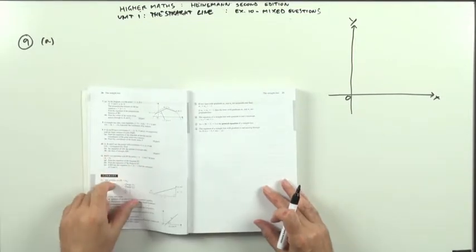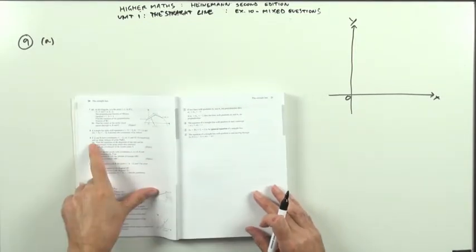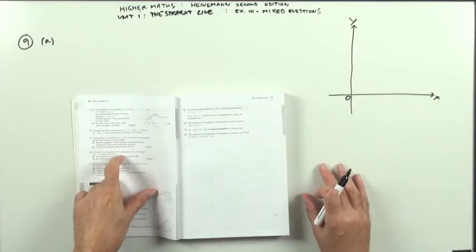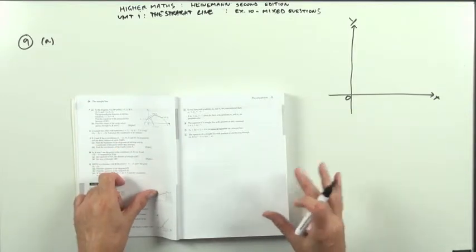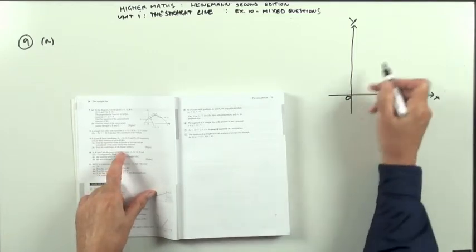Heinemann Higher, exercise 1-0, number 9. Now there's a diagram required this time just so you can visualize what's happening. You don't need to do a diagram, but it's much easier if you just have a quick sketch.